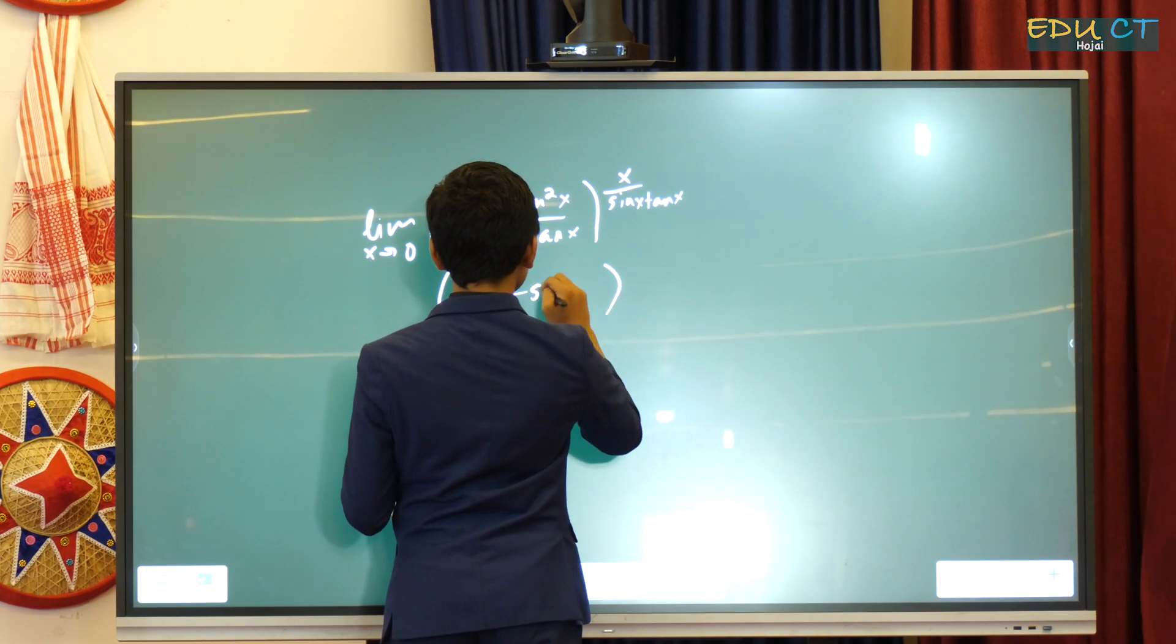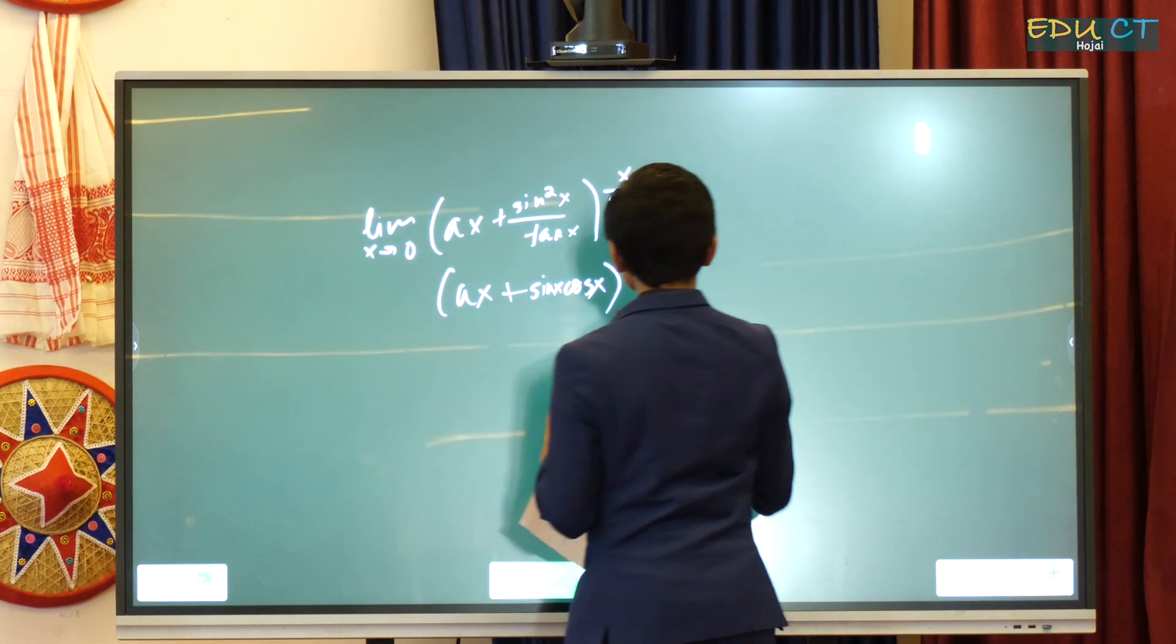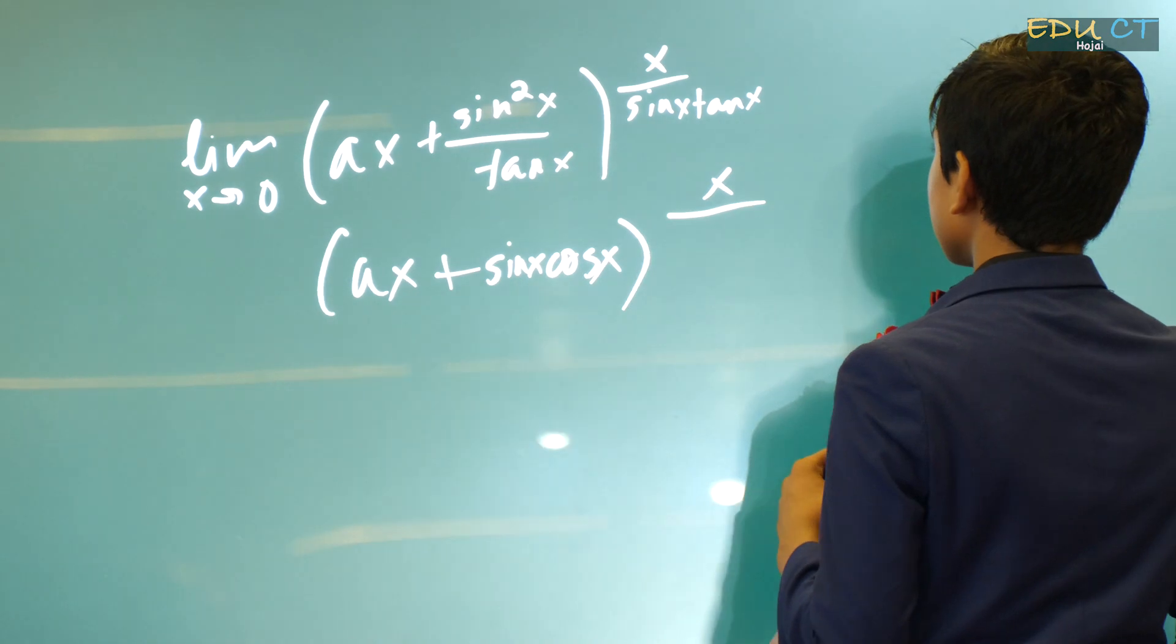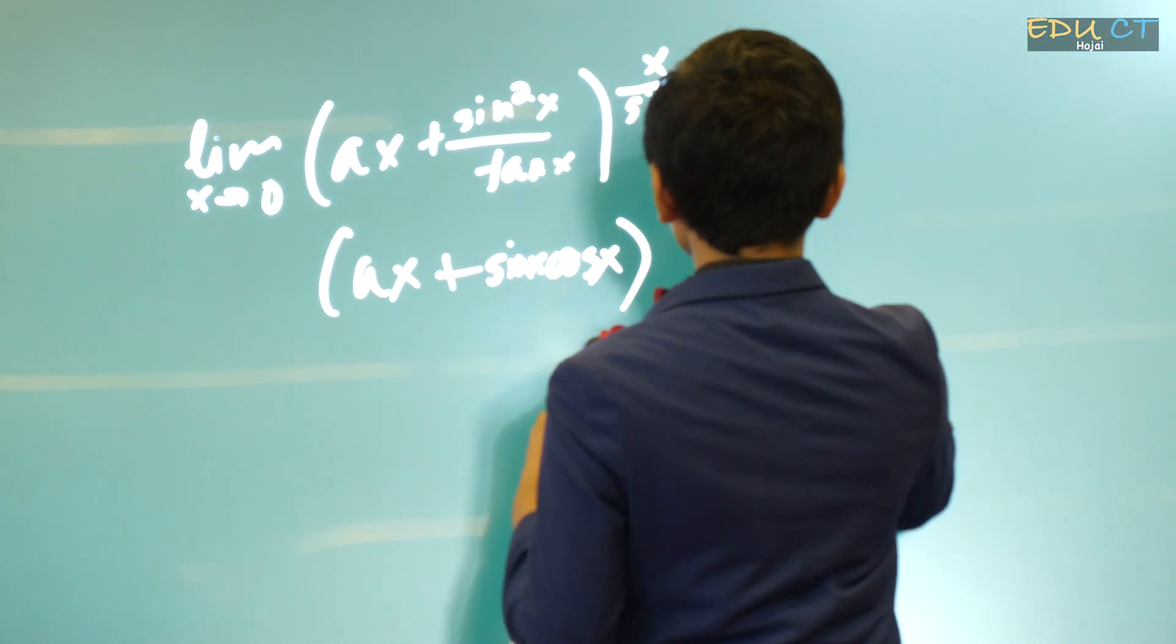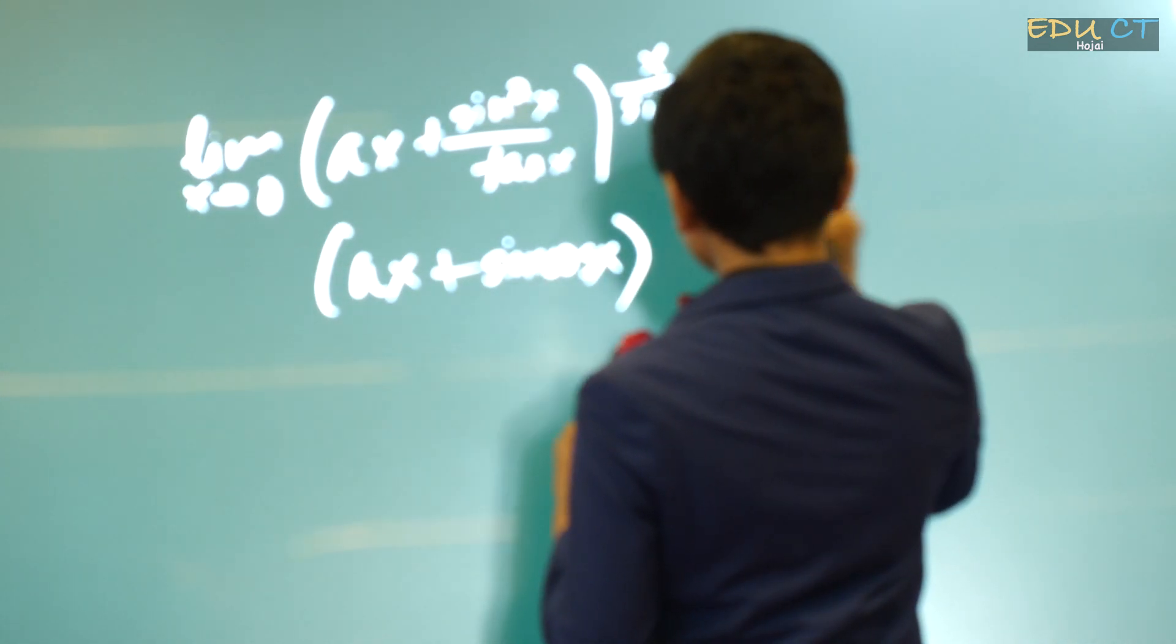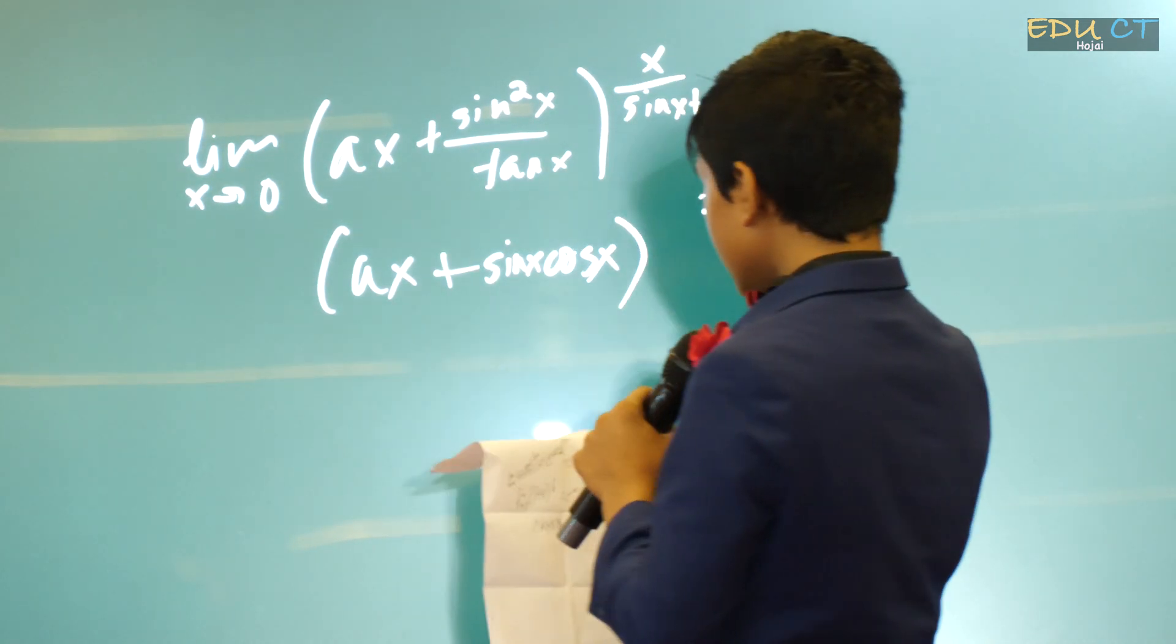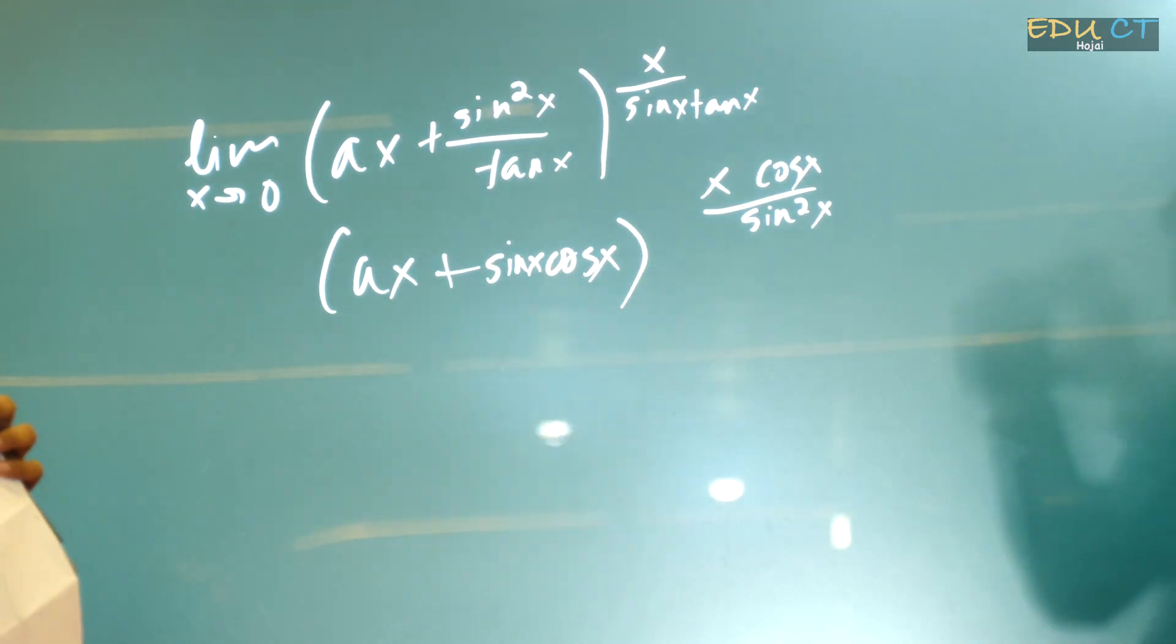This is going to be sin x cos x. And then x over sin x tan x is going to be x over sin squared x cos x. Wait. Oh, this is going to be x cos x over sin squared x. And this is no longer in the form of e, which probably makes it unsolvable. Just to be sure though.